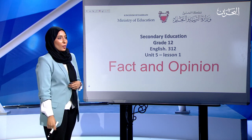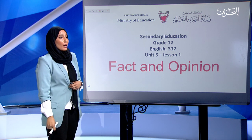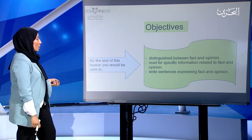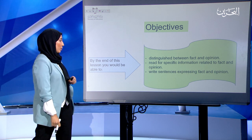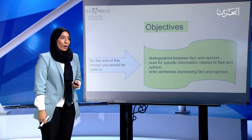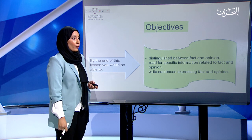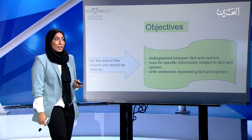Dear grade 12 students, welcome to this presentation in which we will be covering English 312, Unit 5, Lesson 1: Facts and Opinion. The objectives of this lesson will be: by the end of this lesson, you will be able to distinguish between fact and opinion, read for specific information related to fact and opinion, and write sentences expressing fact and opinion.